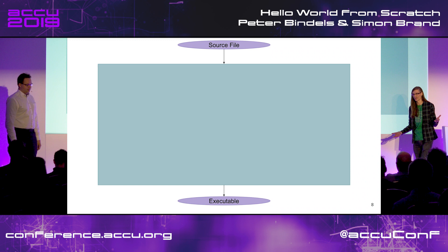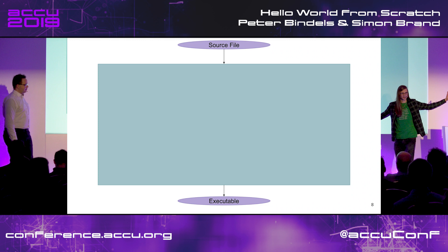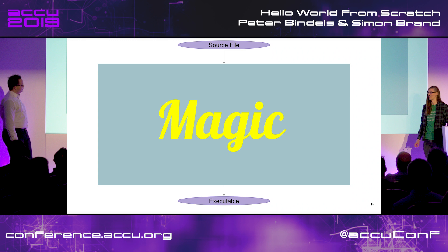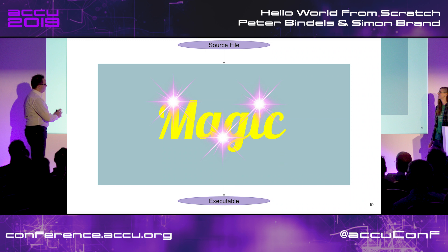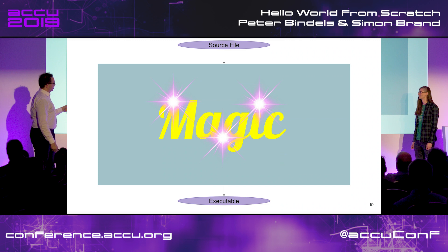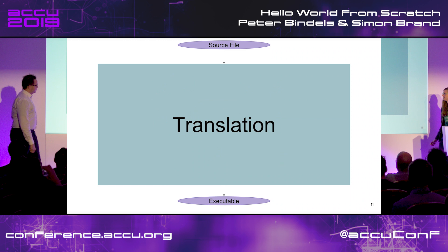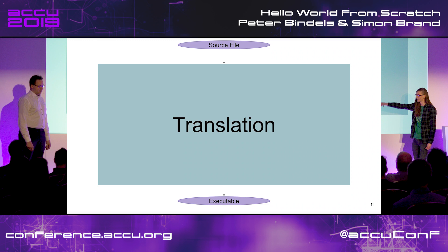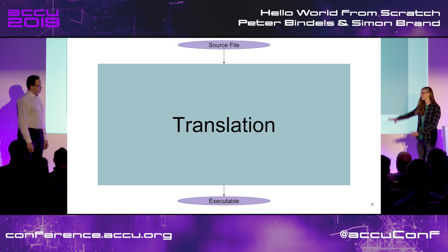This is what a lot of people see when they write C or C++. We have a source file at the top, a big blob, and an executable. Somewhere in this big blob there is magic — sparkly magic. We don't know what's going on in there. What if we remove magic? In reality, it's just called translation. Translation is the process of taking our source file and translating it into an executable which can then be run on our system. Some people refer to this as compilation. Compilation is a part of translation.